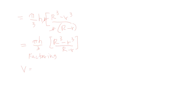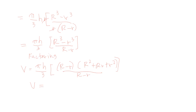Volume equals pi h over 3 times (R minus r)(R squared plus R r plus r squared), all over (R minus r). Canceling (R minus r), the volume of the frustum becomes V equals pi h over 3 times the quantity (R squared plus R r plus r squared). This is the derived formula for the volume of a truncated frustum.